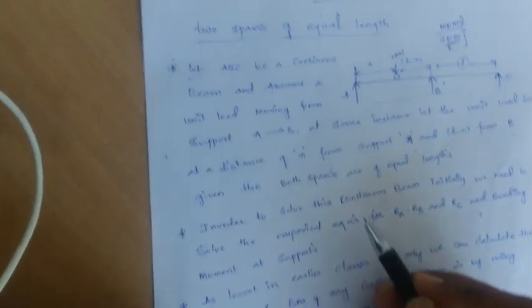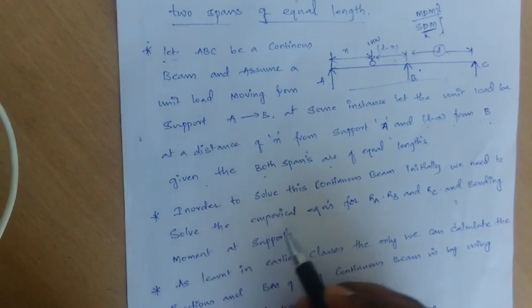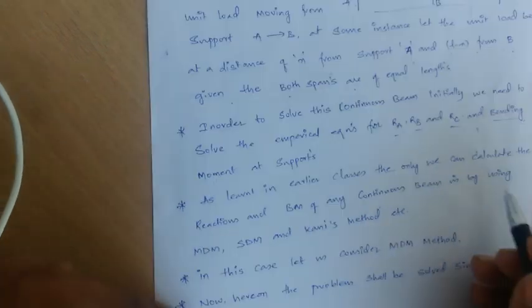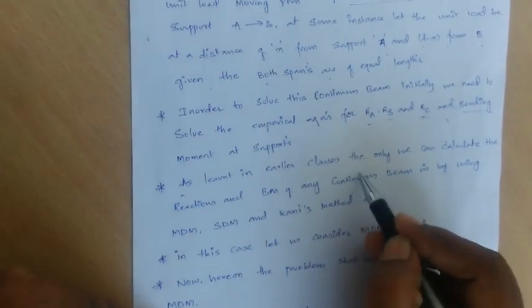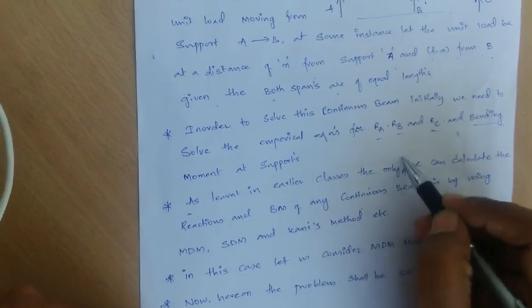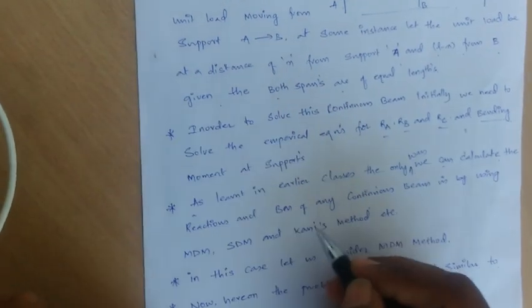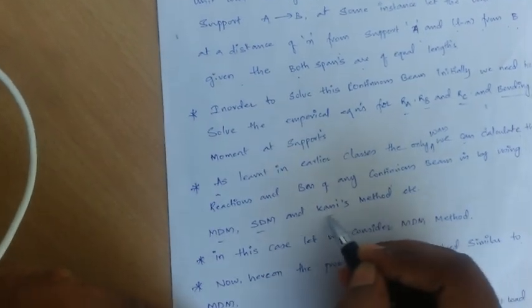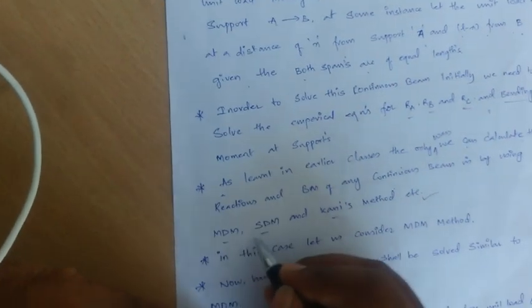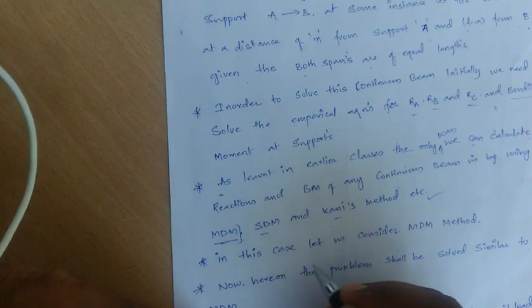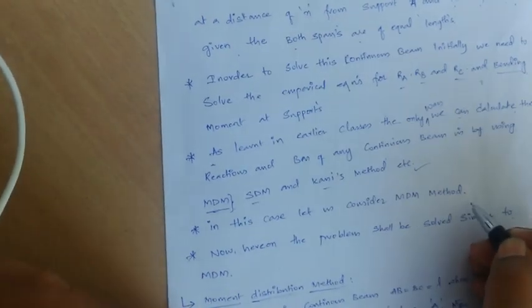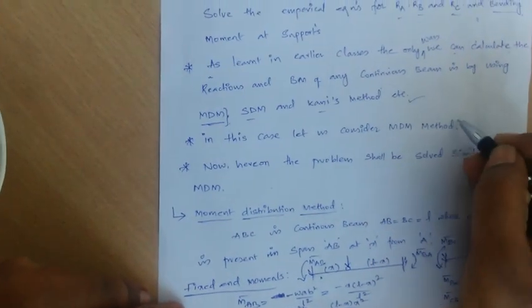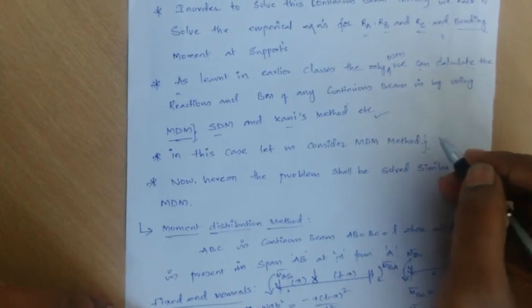In order to solve this continuous beam, we need to derive empirical equations for R_A, R_B, R_C, and bending moment at supports. The only way to calculate reactions and bending moments of any continuous beam is by using the moment distribution method, slope deflection method, or Kani's method. Here we use the moment distribution method.